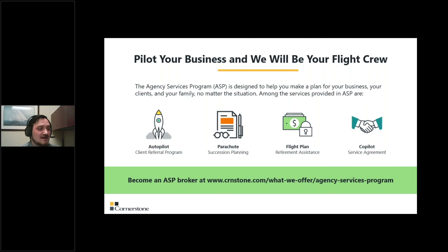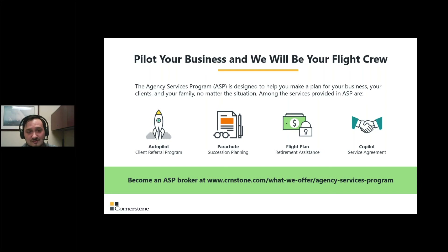Don't forget that we can help you with Autopilot, our agency services program. It's designed to help you make a plan for your business, your clients, and your family. Among the services provided are Autopilot, our client referral program; Parachute, which is succession planning; Flight Plan, which is retirement assistance; and Copilot, which is our service agreements. You can take a closer look at www.crnstone.com/what-we-offer/agency-services-program.